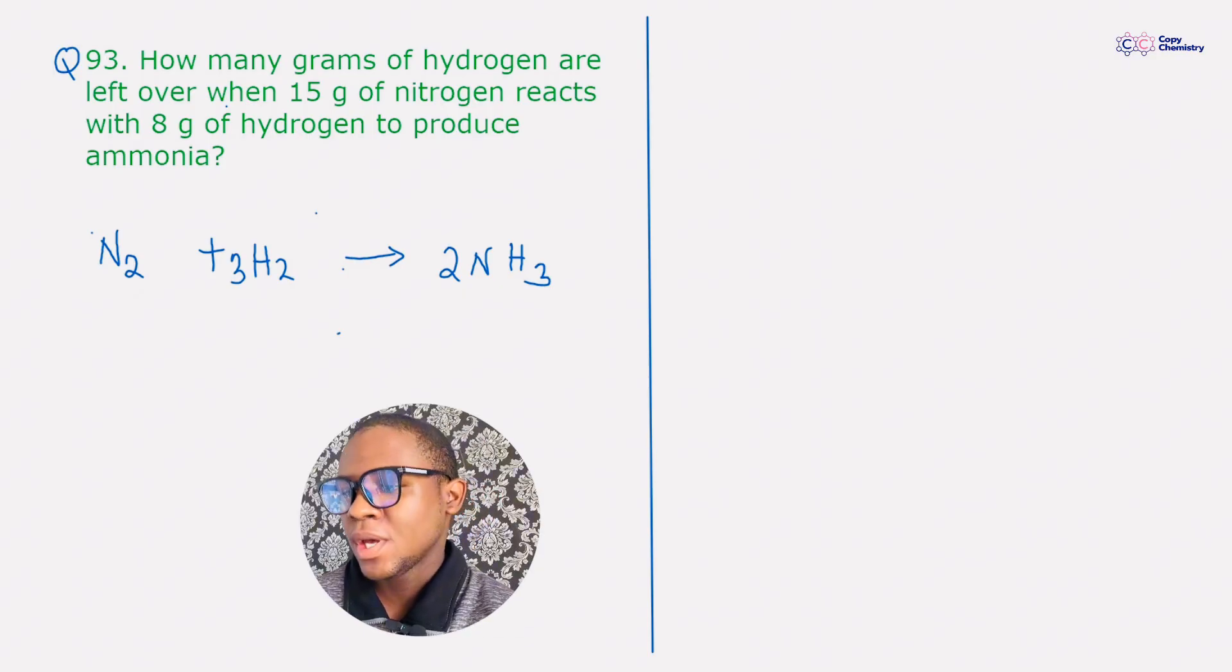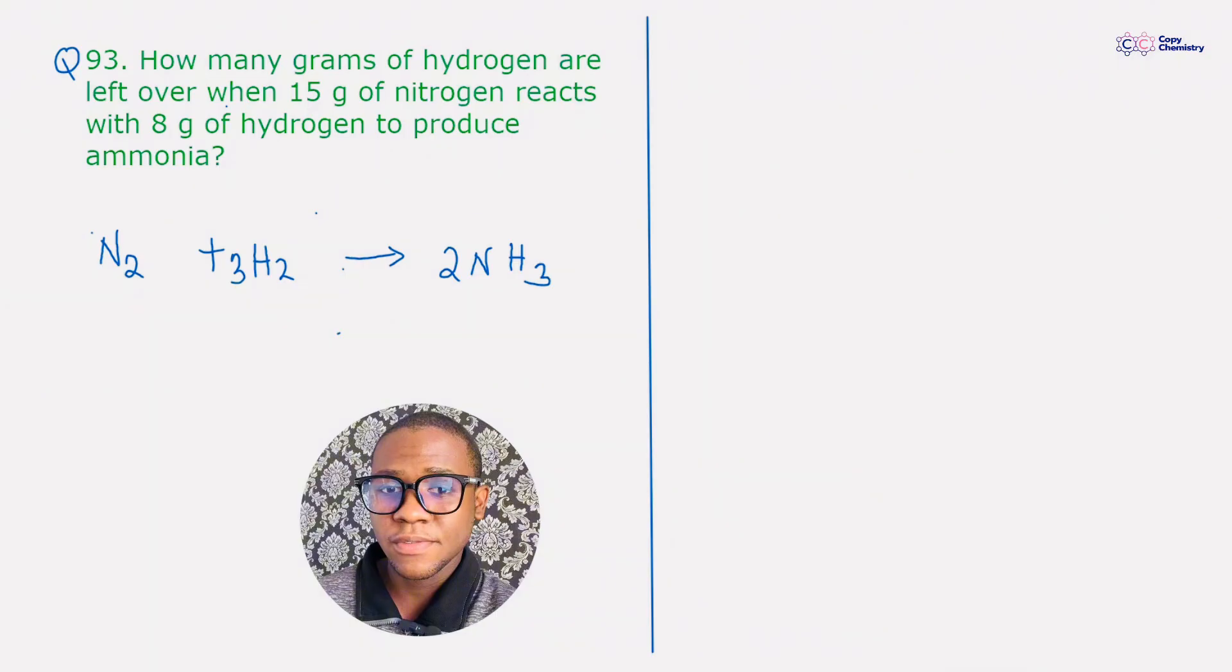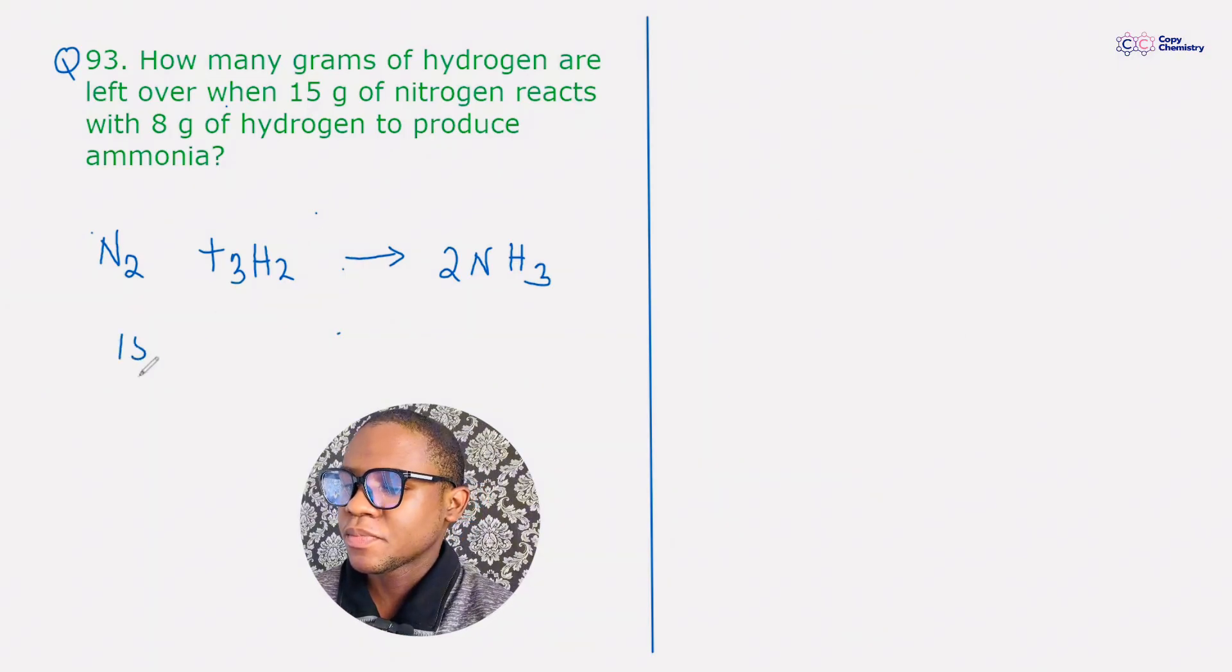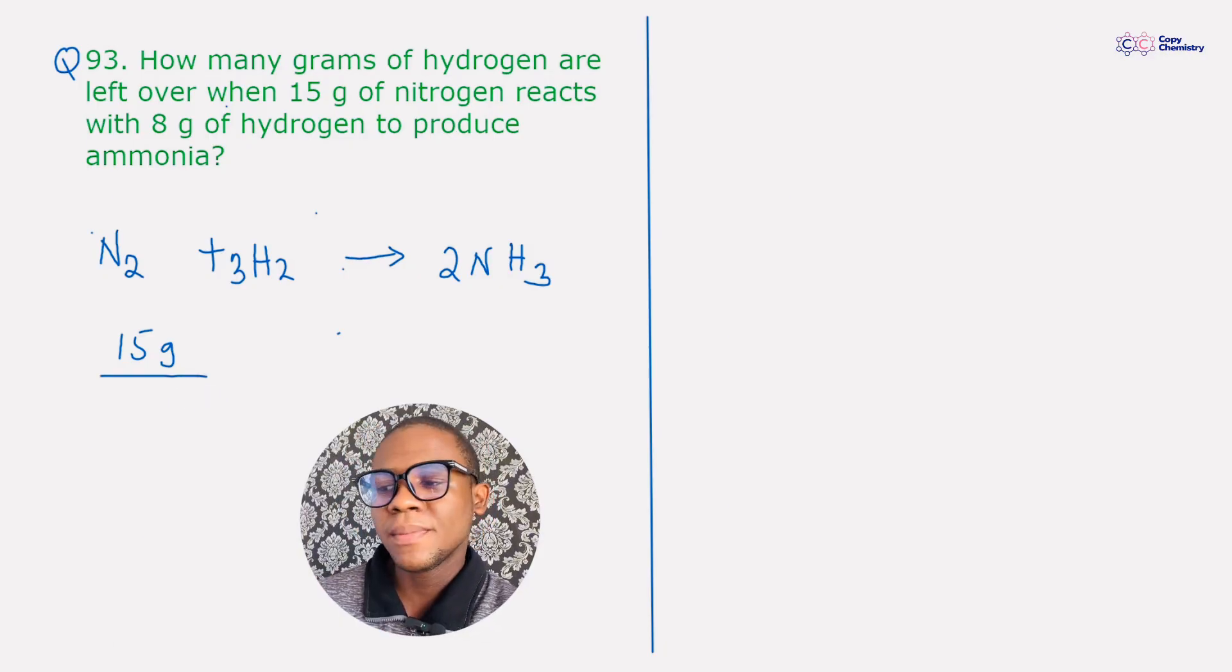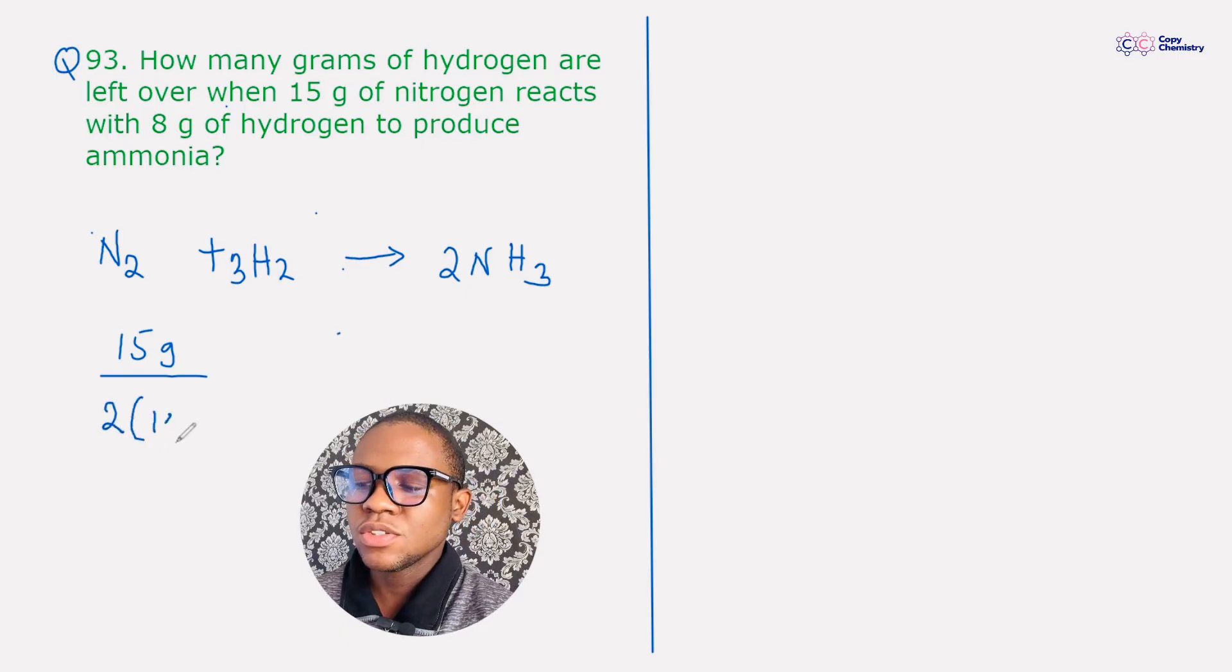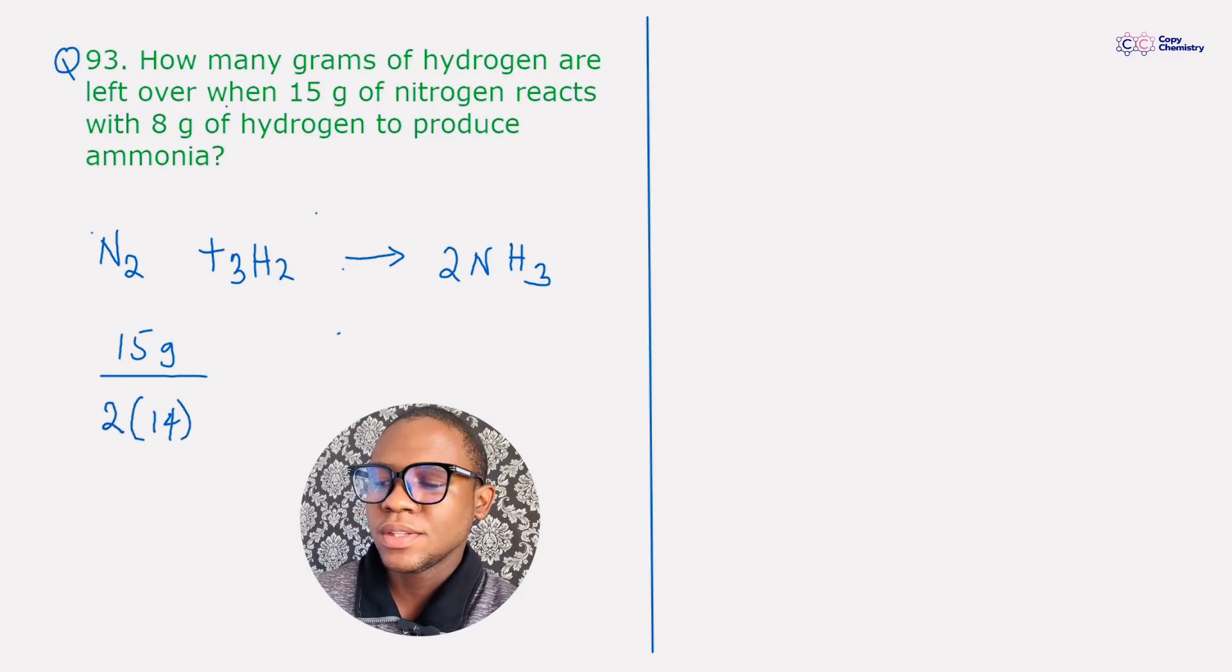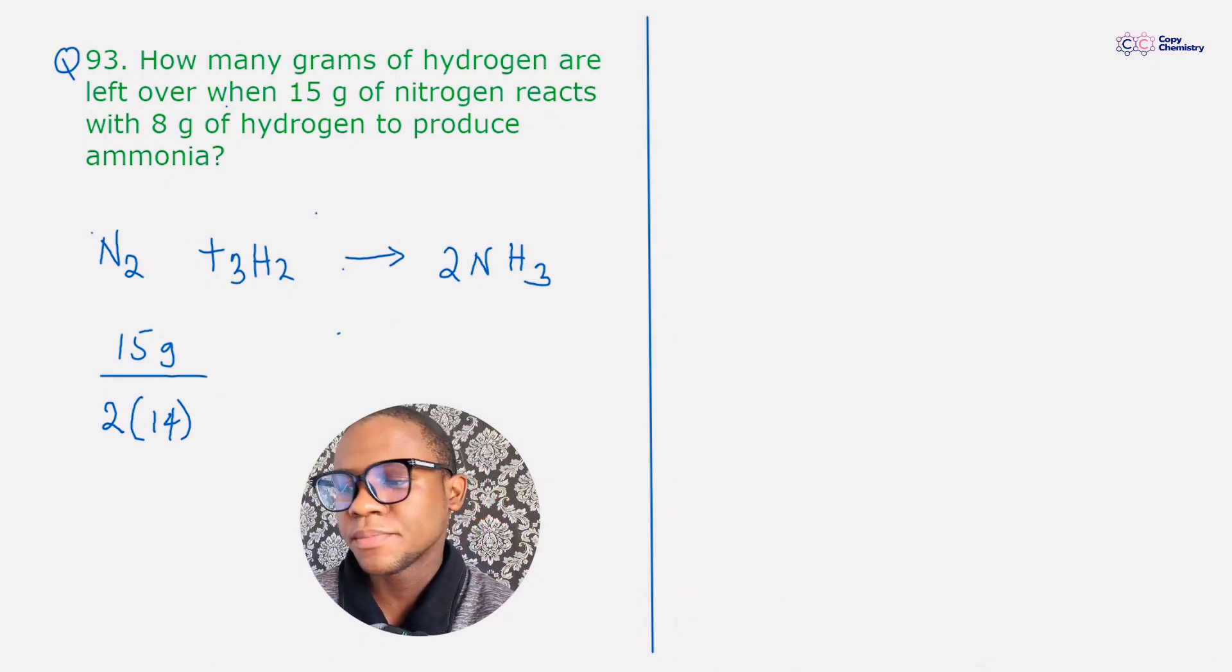Now nitrogen, let's find out how many moles of that we have. 15 grams can be converted to moles by dividing the grams by the molar mass of nitrogen, and the molar mass of nitrogen is going to be 2 multiplied by the relative atomic mass of nitrogen, which I'm writing there as 14. So let's calculate that. We're going to have 0.535 moles.